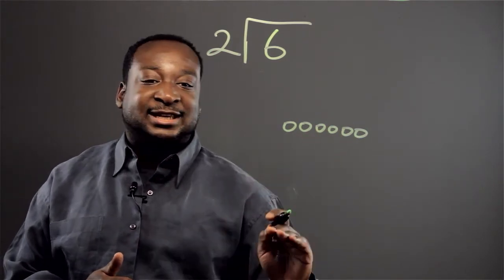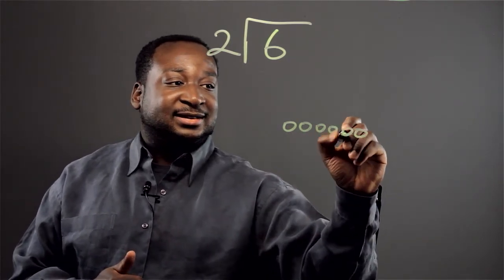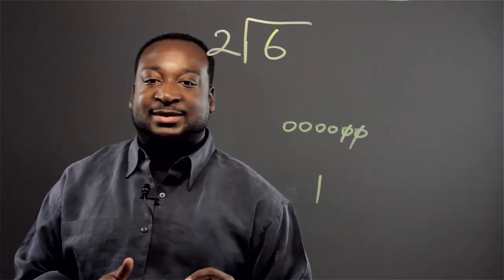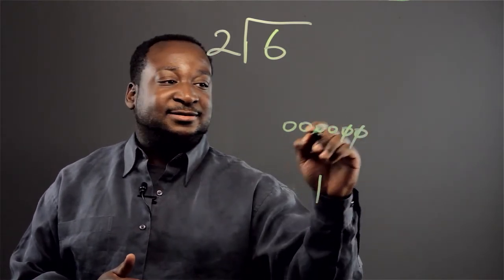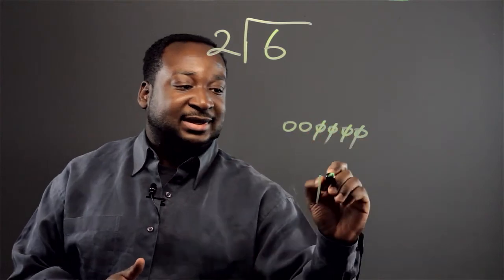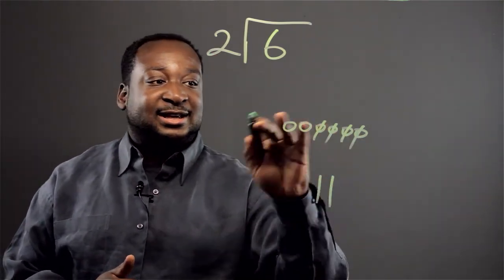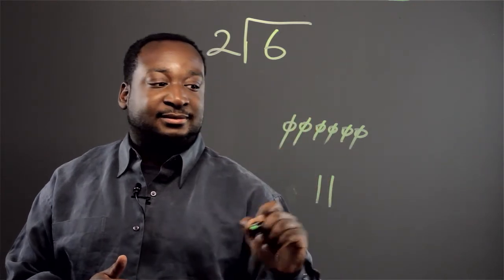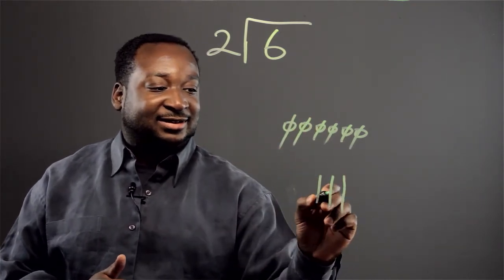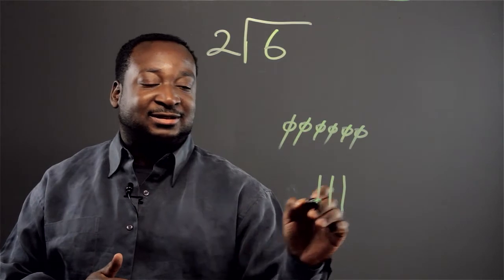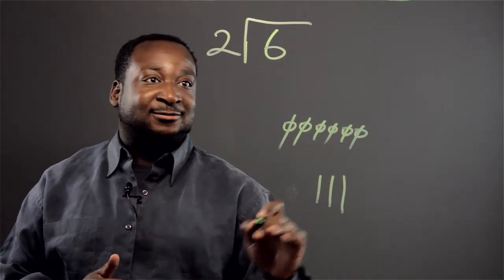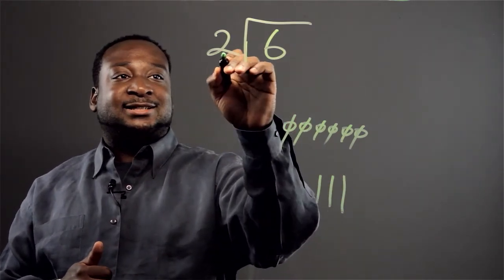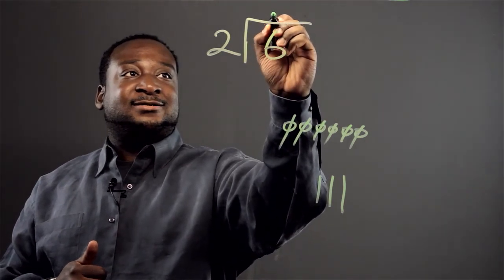Now we're going to take away 2. That's one time. Now we're going to take away 2 again. That's 2 times. Now we're going to take away 2 again. And now we have it — 3. We were able to take away 2 from 6, 3 times. So 6 divided by 2 is equivalent to 3.